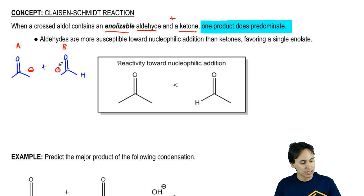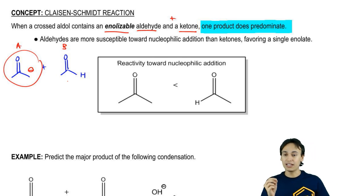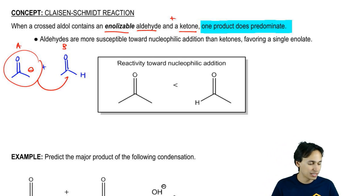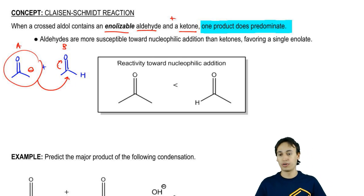But what actually happens is that you only form the enolate on A. Why? Because B happens to be an aldehyde so it's a group that is easier to do nucleophilic addition with.